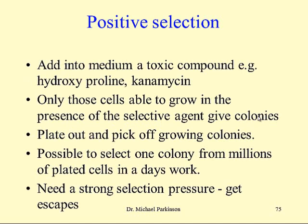You do need a strong selection pressure, and you will get escapes — non-transformed colonies which are growing on the toxic compound. This is a particular problem with kanamycin. Any agent which destroys the compound itself; in this case, kanamycin is phosphorylated by neomycin phosphotransferase. If there are cells sitting on top of the callus that don't have that gene, they will be protected by the cells underneath which have decontaminated the kanamycin.